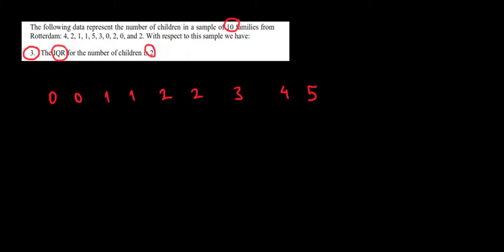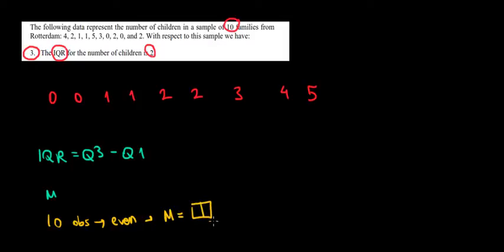So how do we do that? We know that the interquartile range is going to equal the difference between the third quartile and the first quartile. But before finding those, we must find out the median. And knowing that we have 10 observations, which is an even number, the median is going to equal the average of the middle two observations.